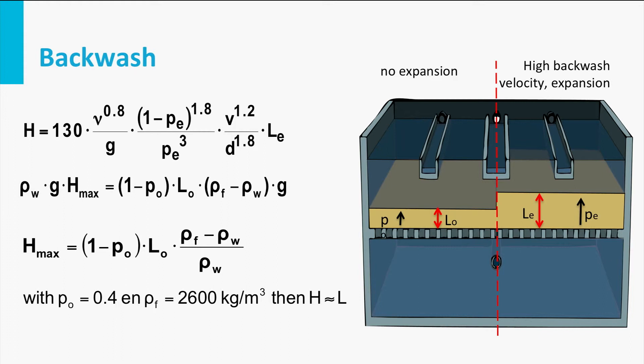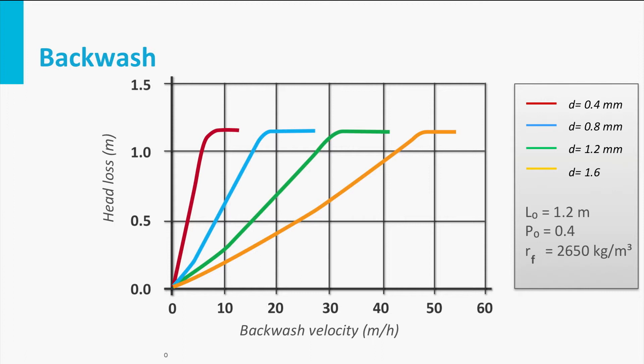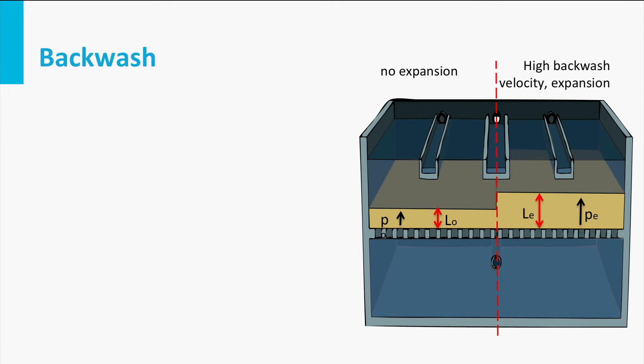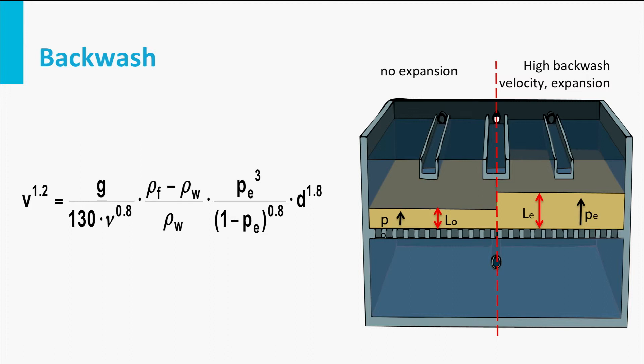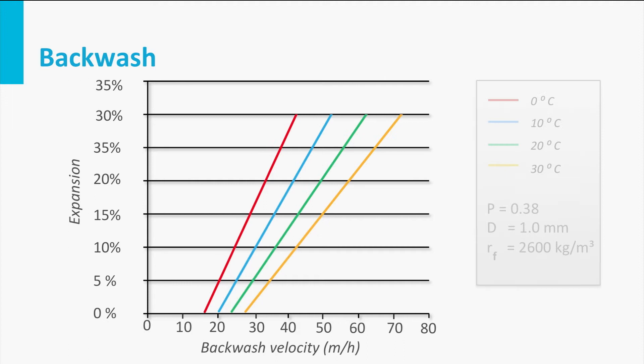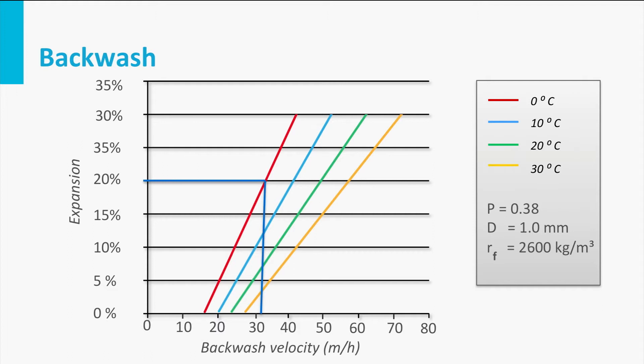The resistance is a function of the backwash velocity, and the maximum resistance is dependent on the grain diameter. The backwash velocity needed to achieve a certain expansion E and the resulting porosity PE can be calculated with a combination of the equations given. To achieve a bed expansion of 20%, a backwash rate of more than 30 meters per hour is necessary — considerably higher than the filtration rate, which varies between 1 and 20 meters per hour.